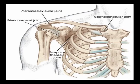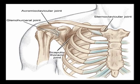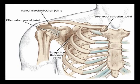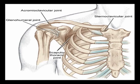The scapulothoracic joint is not an actual joint. It forms between the anterior surface of the scapula and the posterior aspect of ribs number two through seven.